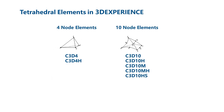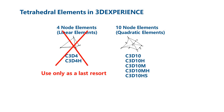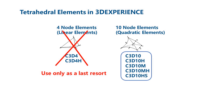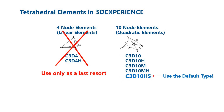3D experience has both 4-node and 10-node tetrahedral elements. The 4-node tetrahedral elements are also called linear elements, and the 10-node tetrahedral elements are also called quadratic elements. 4-node elements tend to significantly over-predict the stiffness of structures and should only be used as a last resort. When meshing a part in 3D experience, you need to select quadratic elements. There are 5 types of quadratic tetrahedral elements in 3D experience, and the mathematical formulation of each is slightly different. The C3D10HS element is the default tetrahedral element type. While it requires a longer solution time than some other elements, it is a great element to use when you are first starting to use structural simulation.